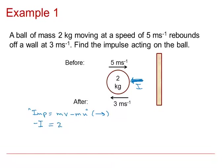Final momentum is mass 2 times its final velocity to the right. The final velocity to the right is minus 3, since the velocity is 3 to the left and we're taking right as positive. Then we take away mass 2 times the initial velocity to the right, which is a positive 5. So negative I equals minus 6 minus 10, and rearranging gives I equals 16 Newton seconds.